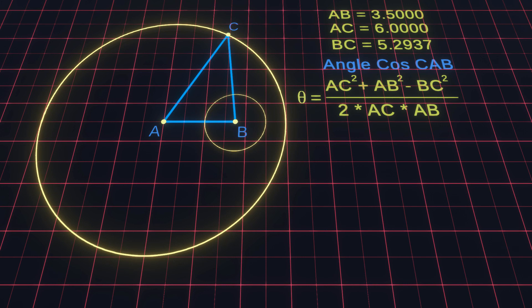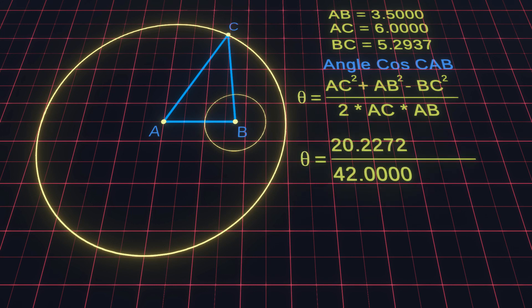To do this we first need the angle cosines of C over AB. In mathematical equations, theta is often used to refer to an angle. To calculate the angle we add the square of AC to the square of AB and subtract the square of BC from that. Then we divide this by 2 times the length of AC times the length of AB. This leaves us with about 20 divided by 42, which results in 0.48.